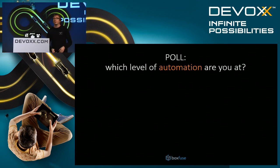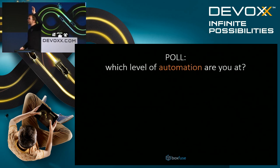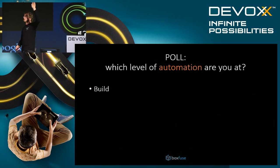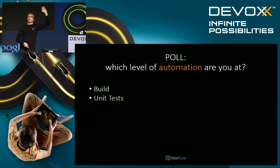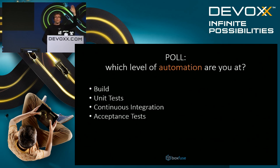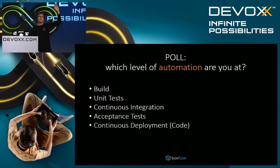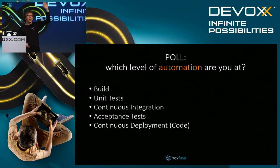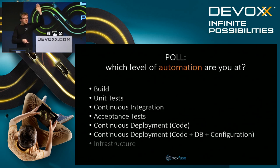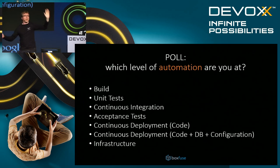Let's get to know each other. I'm going to ask you to raise your hands and keep them up as long as the statements are true to you. Does everyone have an automated build? Yes. Who's doing unit tests? Everyone. CI environment? Yes. Acceptance tests — about 70% of hands still up. Continuous deployment of code? Down to about 30%. Continuous deployment including database changes and configuration? About 10% left. Automated infrastructure deployment? No hands.